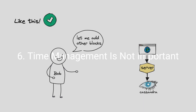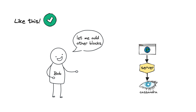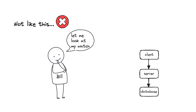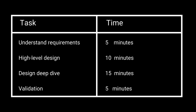Bob skipped doing mock interviews and considered himself a lone wolf. Also, he wasted time creating fancy block diagrams in the interview. While Bill did many mock interviews to improve his communication skills, and used extra time to get familiar with the drawing tool before the interview. He also kept the design simple. This is how he spent time in the interview: understand requirements — 5 minutes; high-level design — 10 minutes; design deep dive — 15 minutes; validation — 5 minutes.